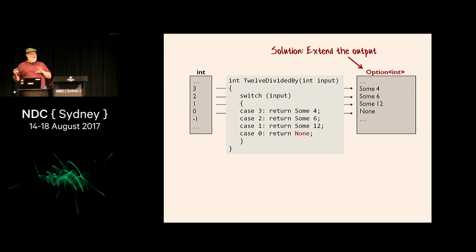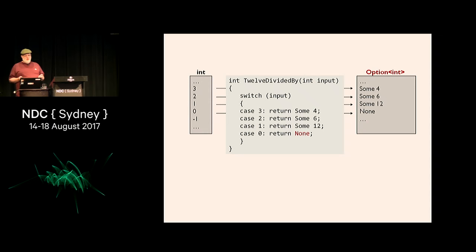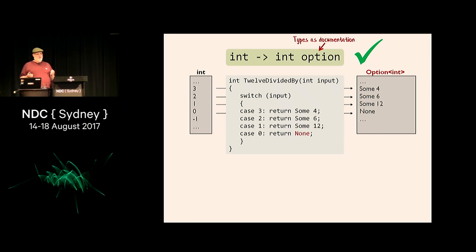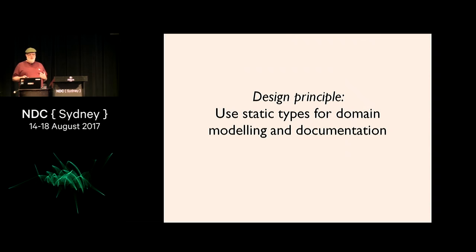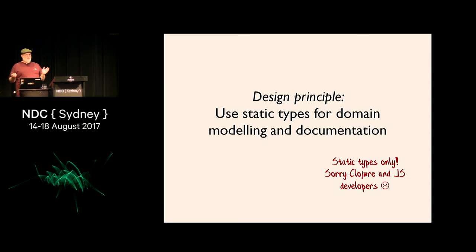Alternatively, rather than constraining the input, you can extend the output. Rather than always returning an int, sometimes you will and sometimes you won't. If you give me zero, I'll give you back nothing. If you give me three, I'll give you back something. In F# we call this the option type - it's either something or nothing. If I look at the signature now it says: you give me an integer, and I might give you back an integer. Again it's telling the truth - acting as documentation. A total function is a really important functional programming pattern. Using static types for domain modeling gives you documentation and compile-time checks.